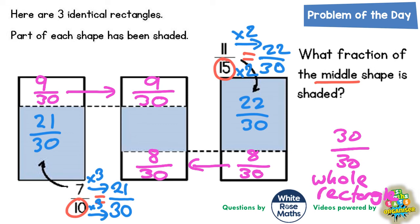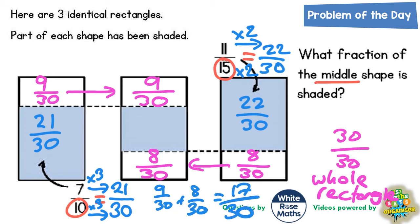Now we can use this information to figure out what has been shaded in the middle rectangle. Nine thirtieths and eight thirtieths added together — nine thirtieths plus eight thirtieths is seventeen thirtieths — which means the middle shaded bit must be thirteen thirtieths. That's the final answer: what fraction of the middle shape is shaded? Thirteen thirtieths.